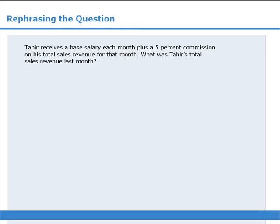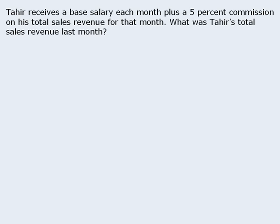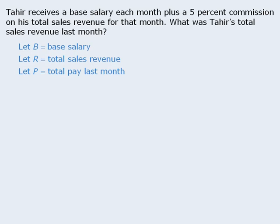In the previous lesson, we examined a question where Tahir receives a base salary plus a 5% commission on his total sales revenue. We want to determine Tahir's total sales revenue for last month. We summarized the information by letting B equal Tahir's base salary, R equal his total sales revenue last month, and P equal his total pay last month. His commission is 5% of his total sales revenue, so we wrote that commission equals 0.05 times R. We also wrote that P equals B plus 0.05R. The target question asks us to find Tahir's total sales revenue, and since we have summarized all the information, we won't need to re-read the passage later on.